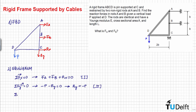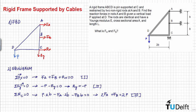Finally, we have that the sum of moments at point C is equal to zero. Writing out this equation and rearranging, we arrive at our third equation.